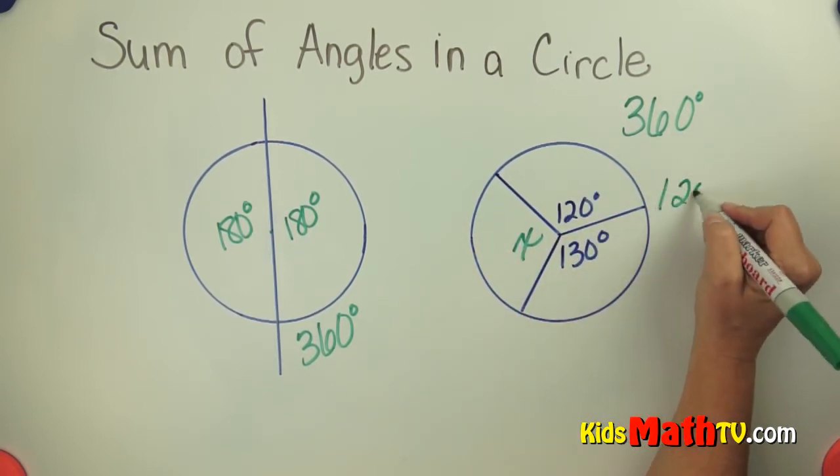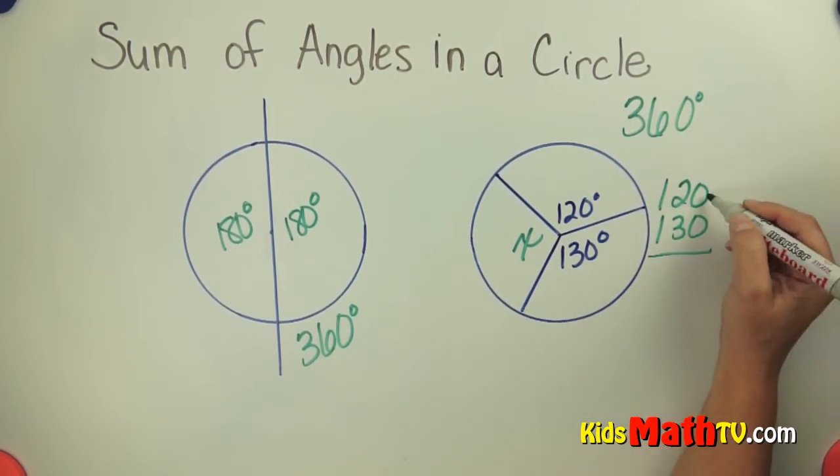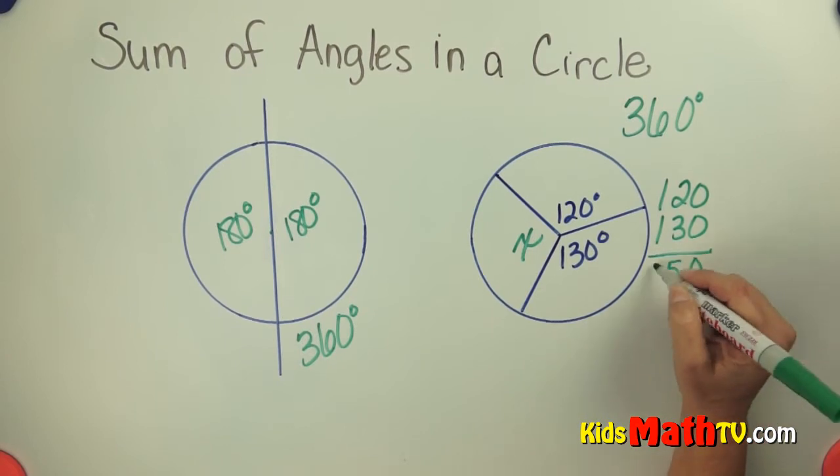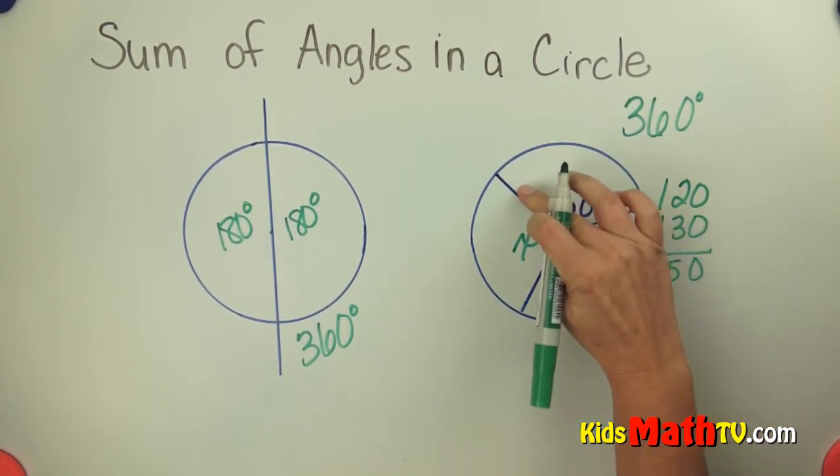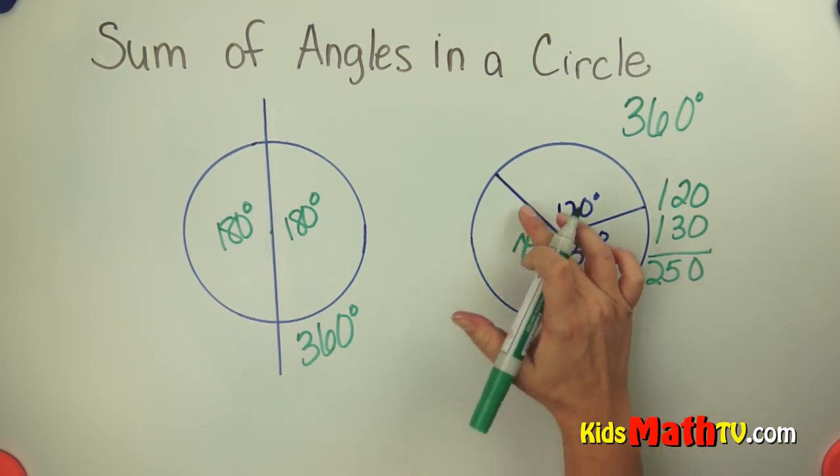We simply add the measures that we know, 120 plus 130, and we get 250 degrees. So from here all the way around to there is 250 degrees. We want to know what's left over.